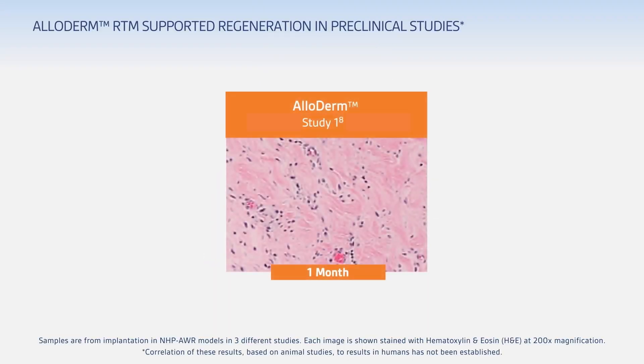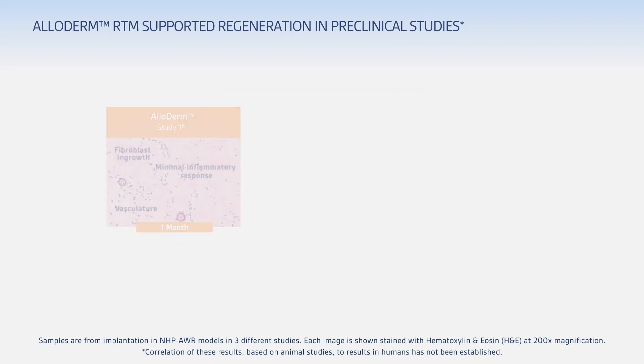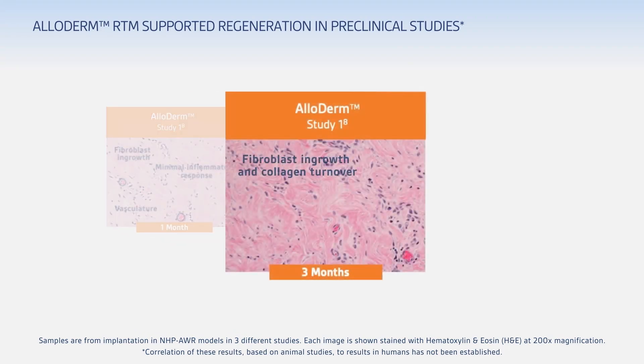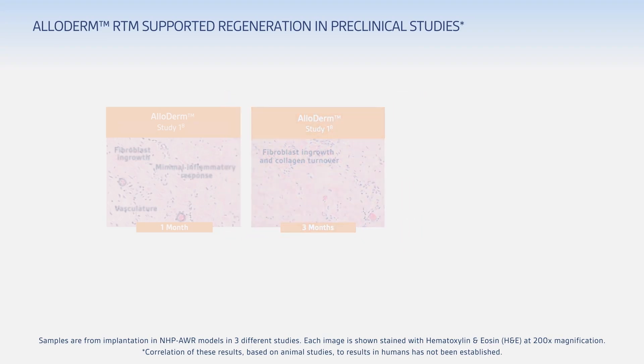We ran preclinical studies in which we implanted ADMs into the abdominal wall in animals. Following explantation at various time points, we performed histologic analysis to evaluate the host response to the implant. At one month, Alloderm shows the beginnings of infiltration by host fibroblasts. We also see budding vasculature in the matrix, along with a minimal to moderate level of inflammation. By three months, the collagen has begun to turn over. It's staining in different intensities, which indicates new collagen deposition from the host, as well as remaining collagen from the implant.